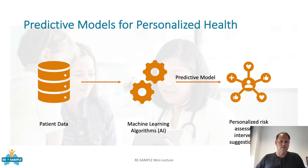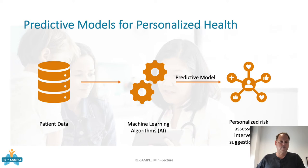The general idea of predictive models to be used in health or personalized health especially is that you have some patient data and you can apply some machine learning algorithms — or AI as many people call it nowadays. From there you get predictive models that you can then use to assess specific patient data, for instance to have risk assessment, intervention suggestions, etc.